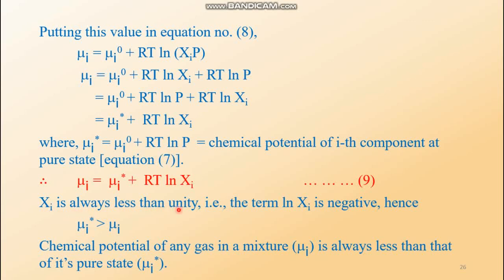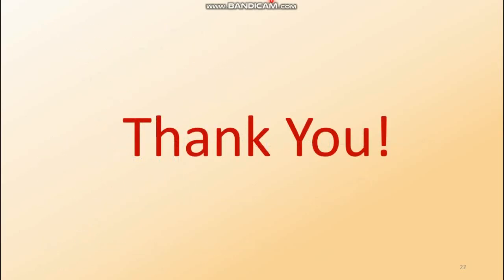Here Xᵢ is always less than unity since it is a mole fraction — it is always less than one. Therefore, ln Xᵢ must always be negative, which means mu i star must be greater than mu i. So the chemical potential of any gas in a mixture is always less than that of its pure state. This is the expression for an ideal gas when present in a mixture, related to its chemical potential in the pure state. Thank you and have a nice day.